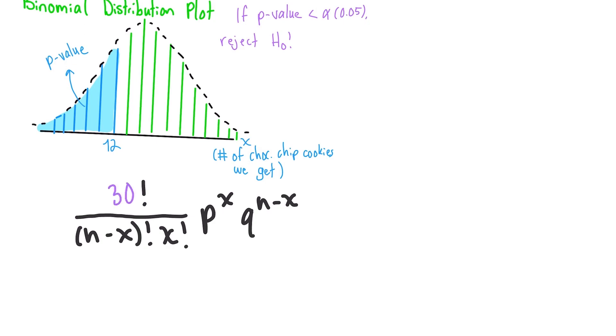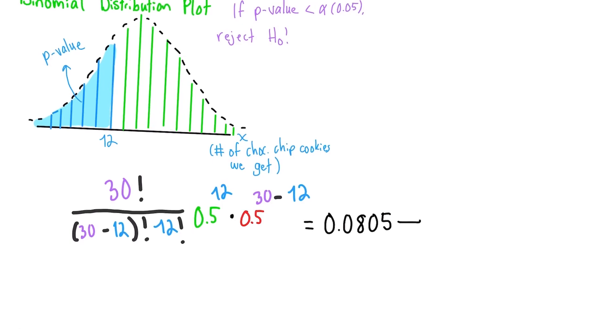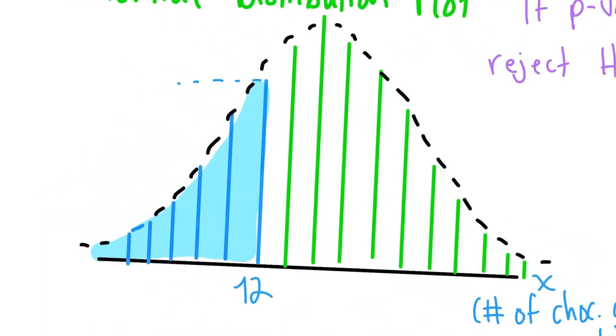Let's plug in 30 for n, 12 for x, and 0.5 for p and q. We get 0.0805, which means that there was just an over 8% chance of getting exactly 12 chocolate chip cookies if we drew 30 times.